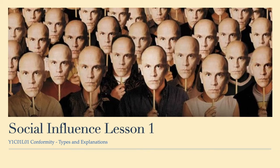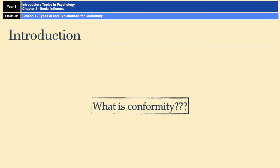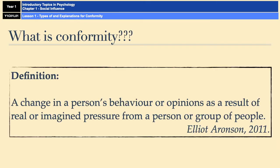Hello and welcome to Social Influence Lesson 1, where we're going to look at types and explanations for conformity. First off, we have to answer the question of what is actually meant by conformity. Conformity refers to a change in a person's behaviour or opinions as a result of a real or imagined pressure from a person or a group of people — that's according to Elliot Aronson in 2011.